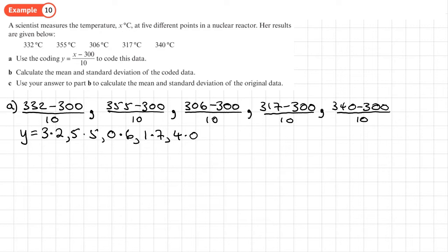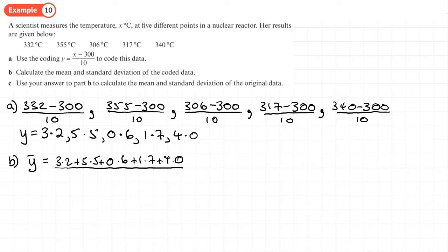For part b, we calculate the mean and standard deviation of the coded data. The mean y-bar equals (3.2 + 5.5 + 0.6 + 1.7 + 4.0) divided by 5, because we have five data values. That gives us 15 divided by 5, so y-bar equals 3.